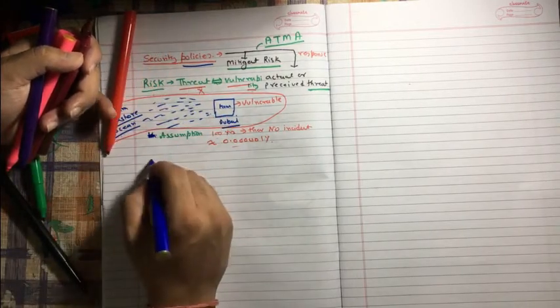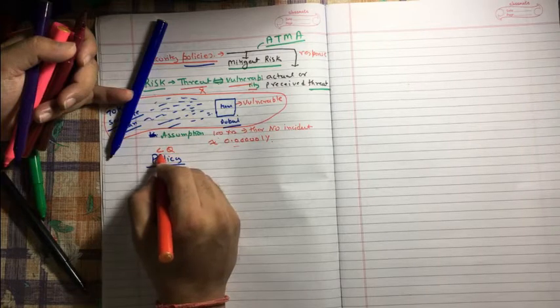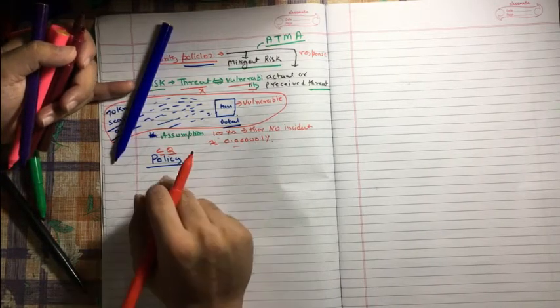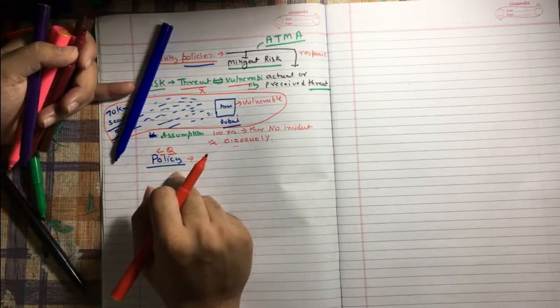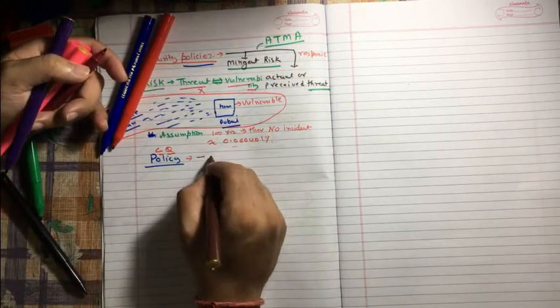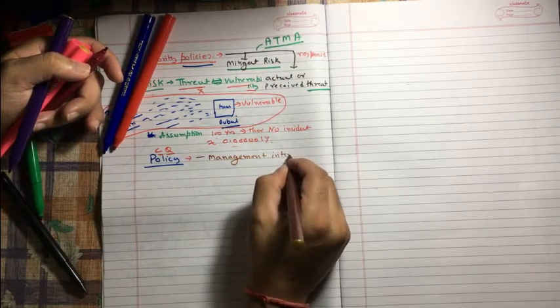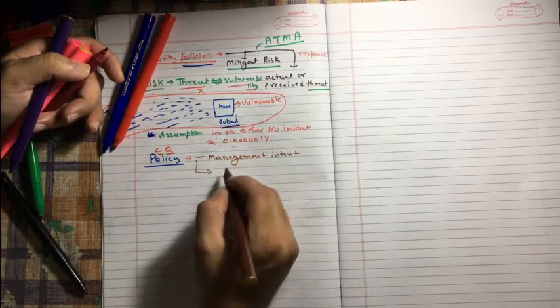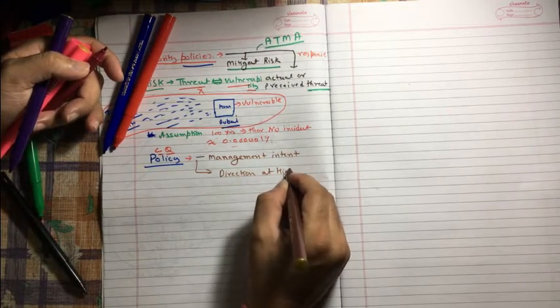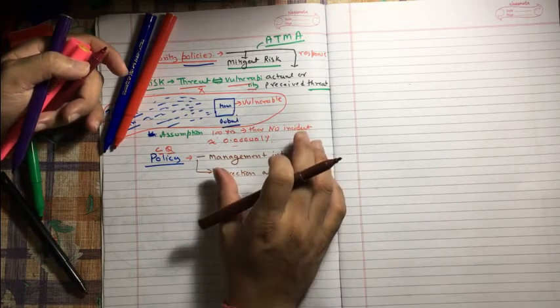Now, let's try to understand what is policy. And this is what I'm going to explain you. You expect a question - this is a very good concept. C means concept, Q means you definitely expect a question. Questions could not be like what is policy - questions will be different, but you can expect a very good question from this definition. Policy states two things. One is management intent, means what management wants. Second, direction at high level.